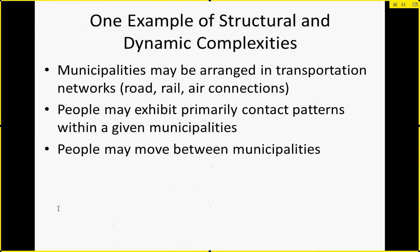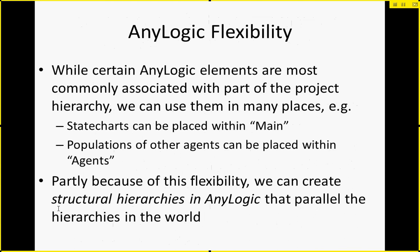An example of structural and dynamic complexities we'll look at here is a situation where municipalities are arranged in transportation networks, where those networks may consist of road, rail, and air connections. People within a given municipality are largely connected with each other, but they may move between municipalities — between these nested contexts.